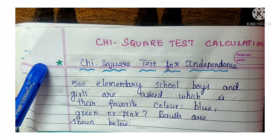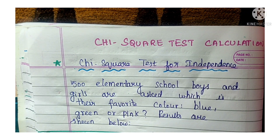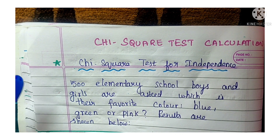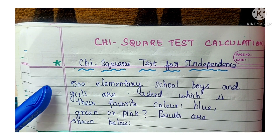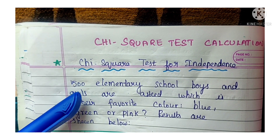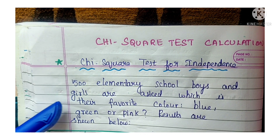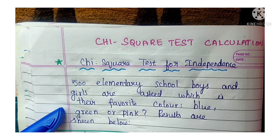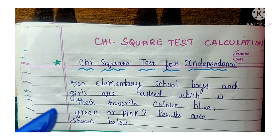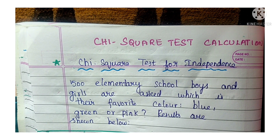Chi-square test calculation — the theory part link is given in the description box, or you can watch it in our channel's statistics playlist. This is a chi-square test for independence. I have given an example: 500 elementary school boys and girls are asked which is their favorite color — blue, green, or pink. The results are shown in the table below.